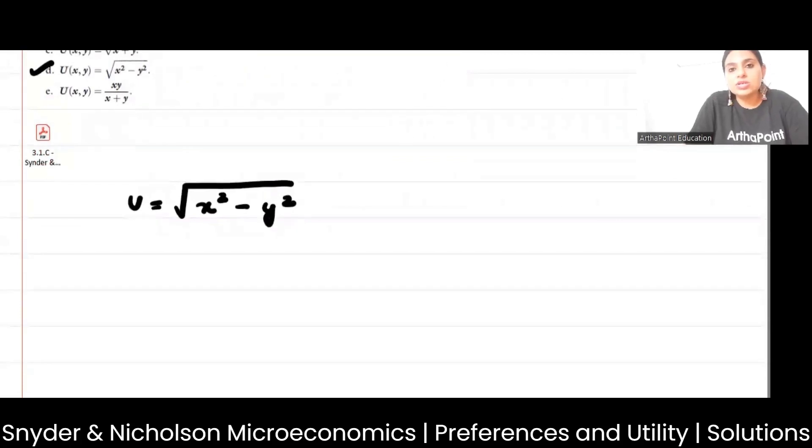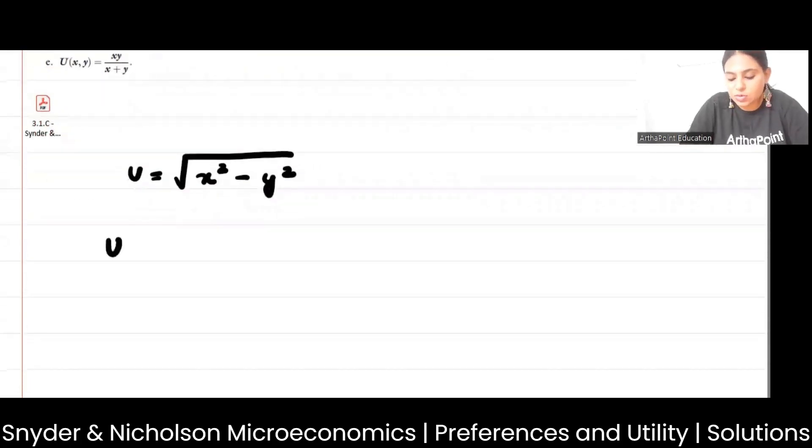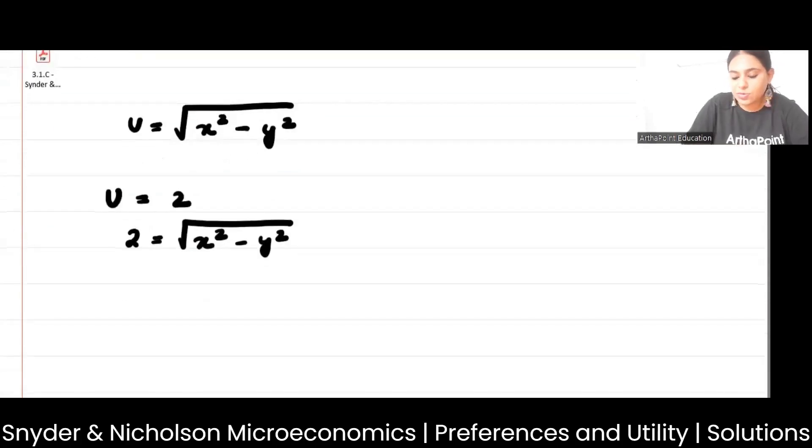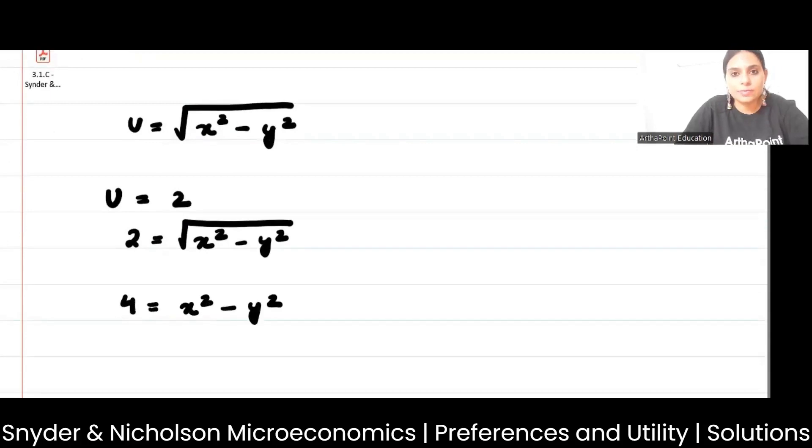Let's say this is my utility function: square root of x squared minus y squared. What I will do is I will assume that my utility is supposedly 2. All my ICs should represent that I get a utility of 2 utils. If I put 2 here, what do I get? Square root of x squared minus y squared. So what would be my equation if I square both sides? 4 is equal to x squared minus y squared.